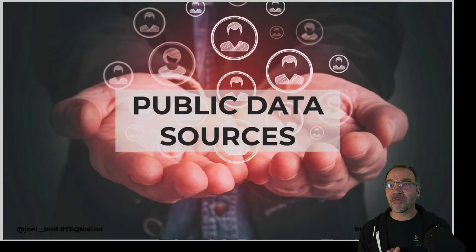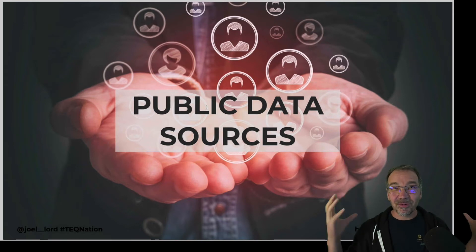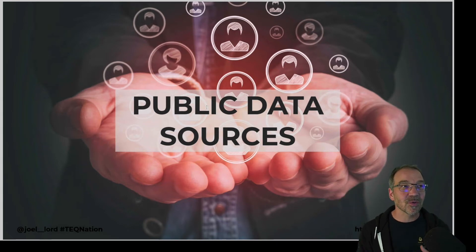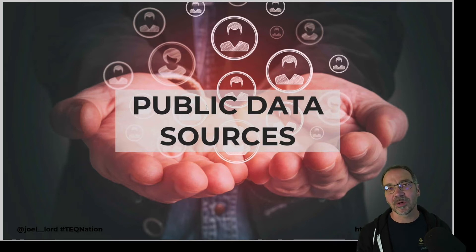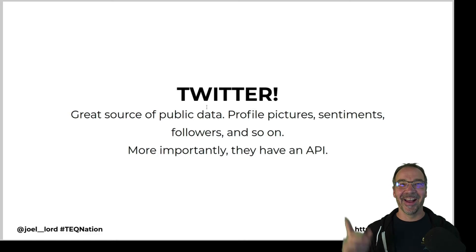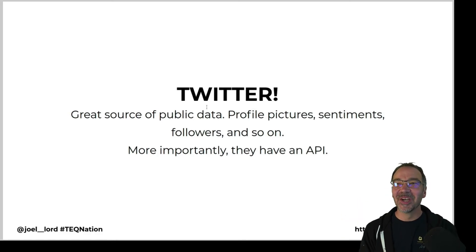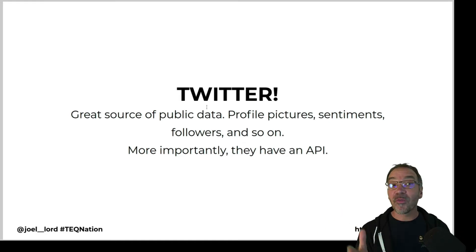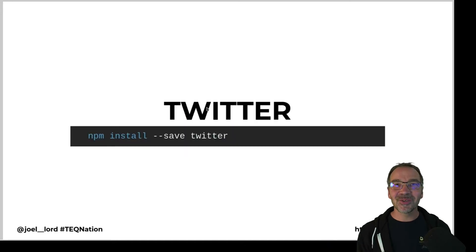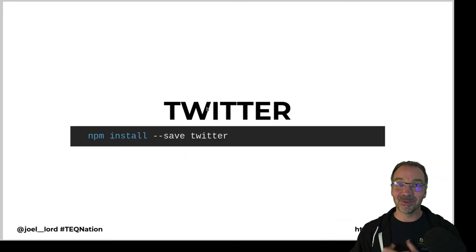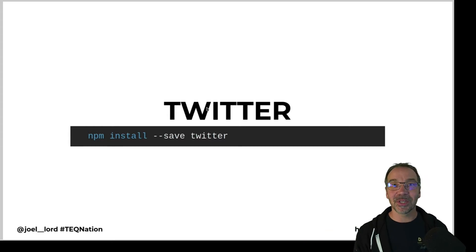My first hurdle: I needed some sort of data source where I could get people's faces, match them with a name or identifier, and find other information about people — all of it public. I thought that wasn't going to work because nobody puts all that data publicly. But social media came to the rescue. Twitter is a great source of public data: profile pictures, sentiment analysis, follower information, and most importantly, they have an API. So as a JavaScript developer, I used npm install to install the Node module that helps with the Twitter API.